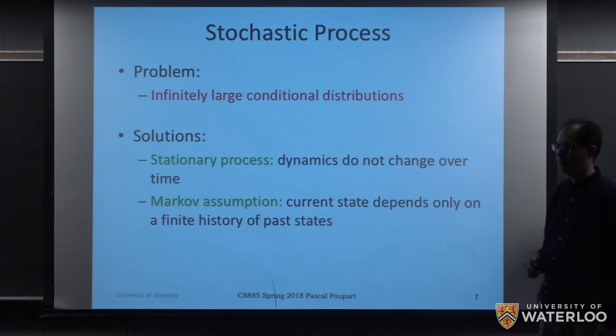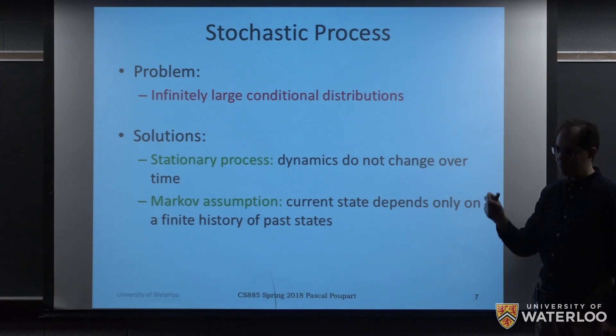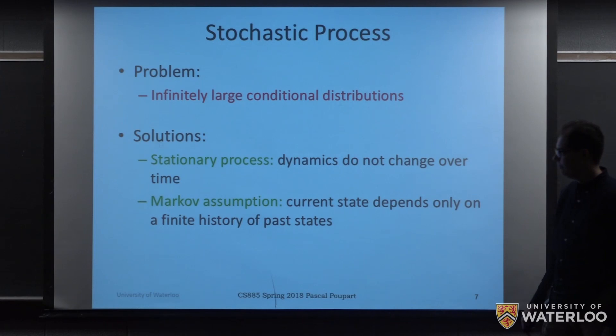Student question: Doesn't the Markov property usually assume it only depends on the previous state, like the one previous state? Good question. So does the Markov property assume that it depends only on the previous state? In some definitions that's correct, but we're going to see that there's a more general definition where there's a notion of k-order Markov processes where it might depend on k previous states.